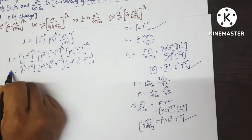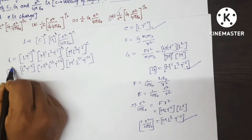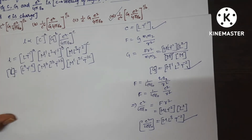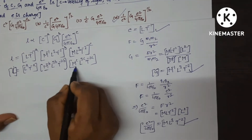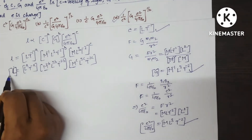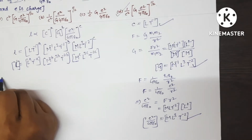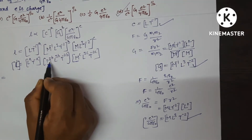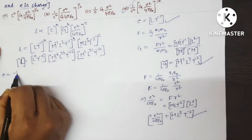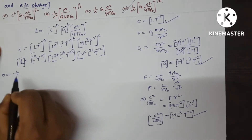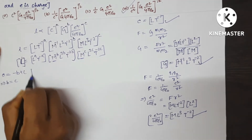Compare term by term. Write the dimensional formula of length as L¹ and compare both sides. First, compare the M terms — mass is not present on the left side, so 0 = −B + C, which implies B = C.